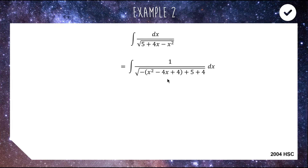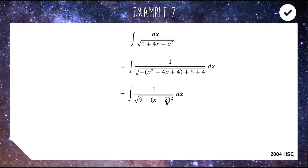Now we can write this as a perfect square: factorizing gives −(x−2)², and swapping the order gives us 9 − (x−2)². Now it's obvious we can use the inverse sine standard integral: the integral of 1 over √(a² − x²) = arcsin(x/a). Here a = 3 and our variable is (x−2); since it's a straightforward substitution you can jump straight to the answer: arcsin((x−2)/3) + c.